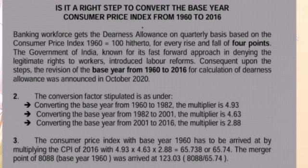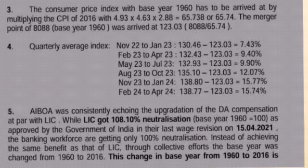The conversion factors stipulated are: converting base year from 1960 to 1982, the multiplier is 4.93; converting from 1982 to 2001, the multiplier is 4.63; converting from 2001 to 2016, the multiplier is 2.88. The CPI with base year 1960 is arrived at by multiplying CPI of 2016 with 4.93 × 4.63 × 2.88.